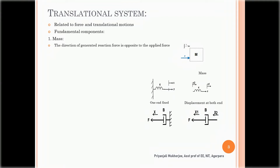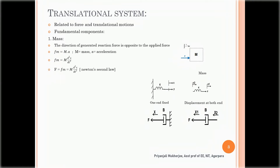The reaction force F_M is proportional to acceleration. We can say this reaction force is equal to mass times acceleration, where acceleration A equals d²X/dt², and X is the displacement. Using Newton's law, the total applied force F equals M·d²X/dt². The mass is assumed to be concentrated at the body.